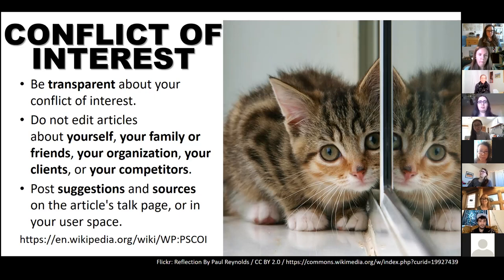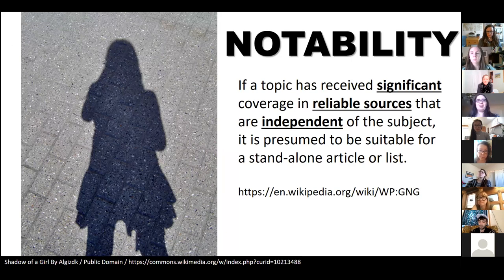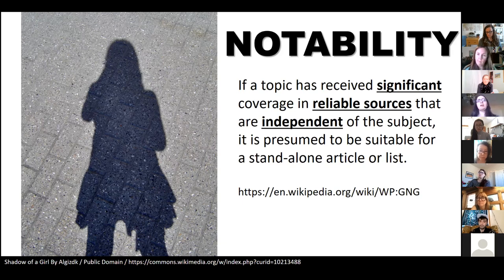For Art and Feminism, the concept of notability is especially important. You don't have to be famous to be on Wikipedia, but there does need to be significant coverage. Generally that means more than a sentence in a newspaper article — ideally a full magazine article, newspaper article, book chapter, or journal article. For starting new articles as a new editor, I recommend having at least two reliable sources about the topic you're going to write about.